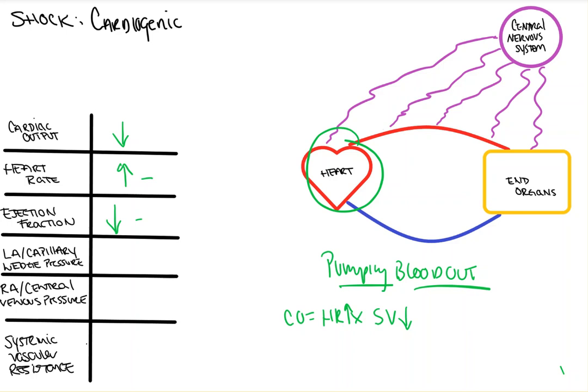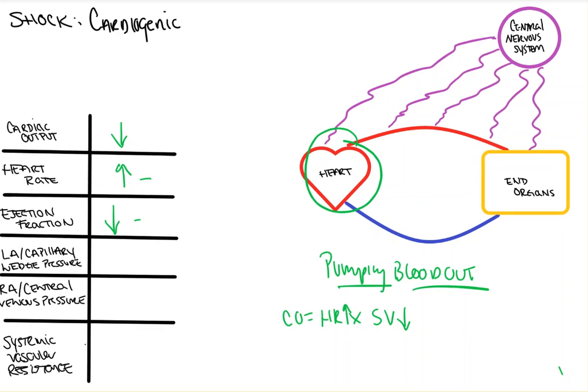As you discussed, things like beta blockers, which slow the heart, or if the heart is the rate-limiting factor leading to shock, it may also not change or it might even go down the heart rate. Overall, cardiac output goes down here. Heart rate may increase, especially if it's an ejection fraction issue, or it will do nothing.